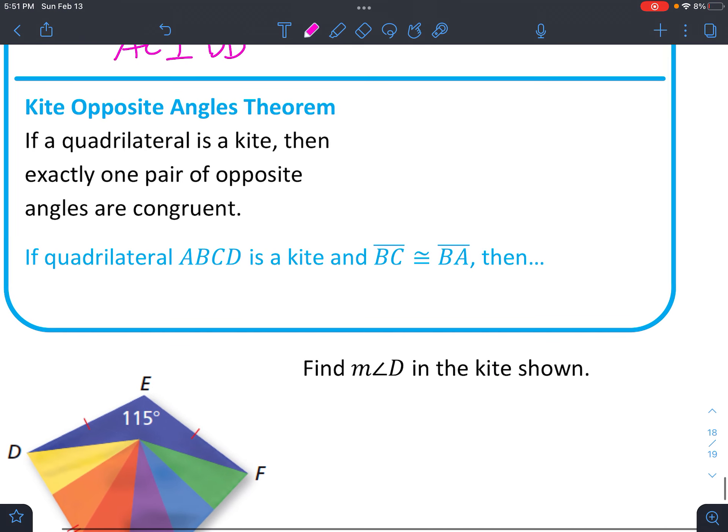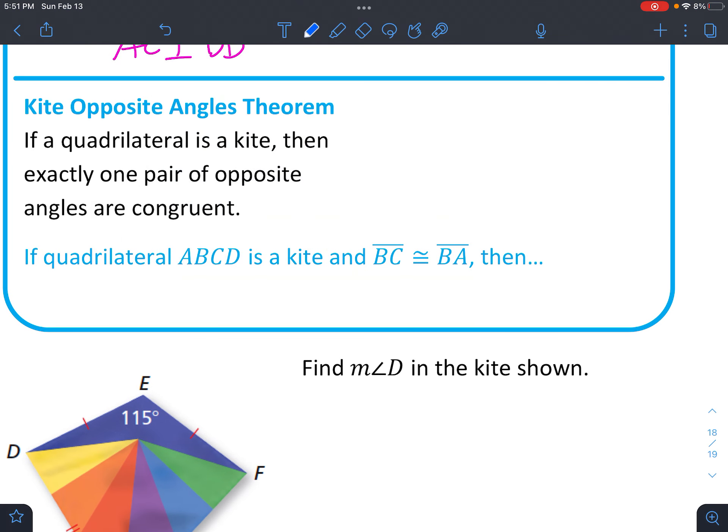Let's look at the next one. So it says the kite opposite angles theorem. If a quadrilateral is a kite, then exactly one pair of opposite angles are congruent. So let's see what that means exactly. It's always much easier to understand if you draw a picture. Draw lots of pictures in geometry.